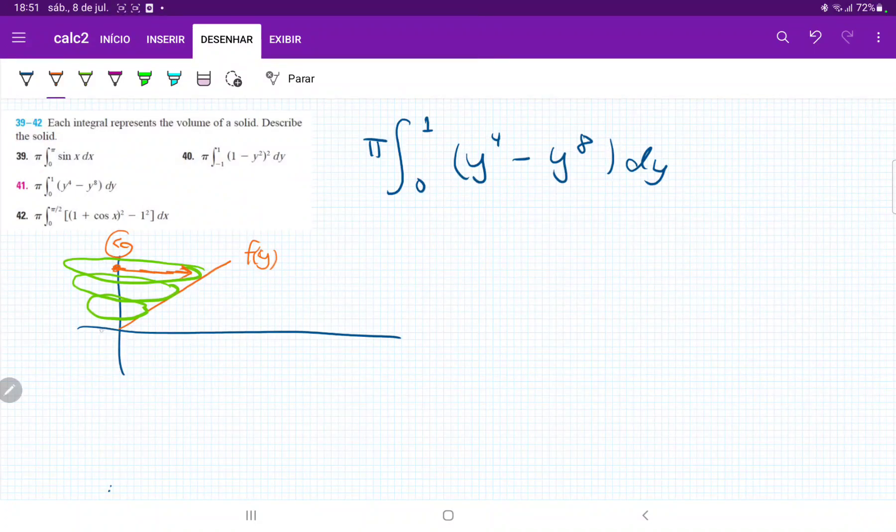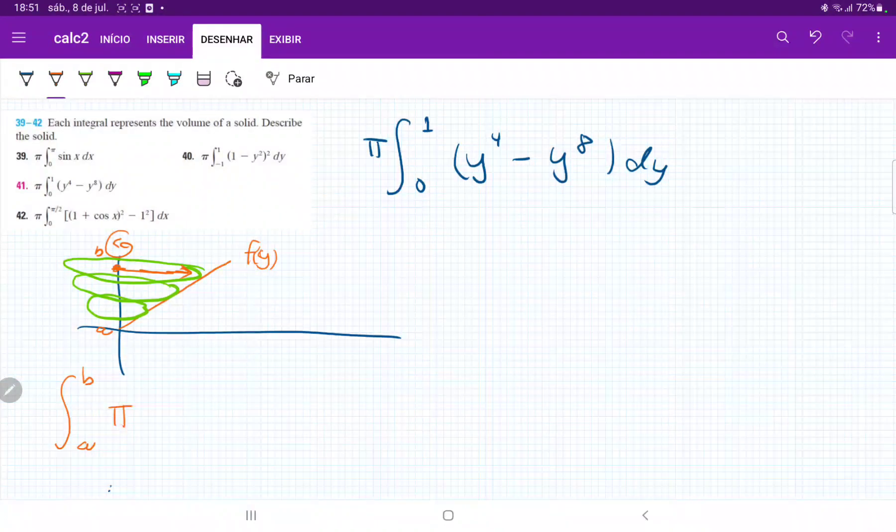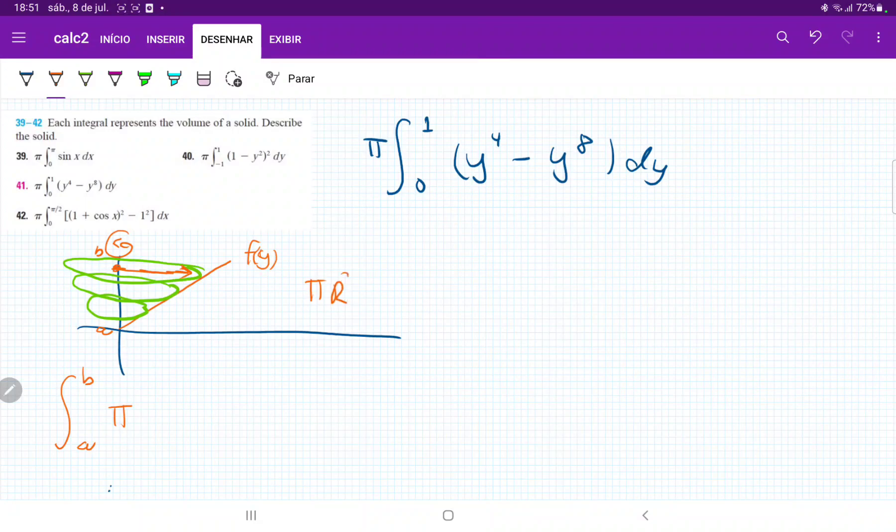Basically, in this situation where we go from a to b, our integral is from a to b, and we're summing up each disk. The area of each disk is just πr², where the radius is the height of the function f(y).